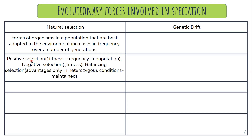Natural selection can be of three types: positive selection, negative selection, and balancing selection. Positive selection increases fitness and therefore its frequency increases in the population. Negative selection decreases fitness and hence is negatively selected. Balancing selection operates when there is no change in the environment, and being heterozygous is the advantage.